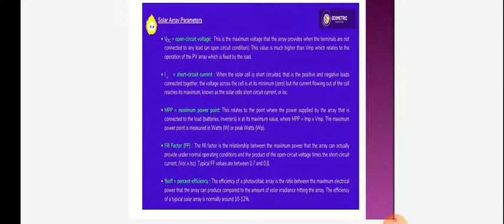The corresponding values of V maximum and IMP can be estimated from the open circuit voltage and the short circuit current. VMP is approximately equal to 0.6 to 0.9 VOC and IMP is equal to 0.85 to 0.95 ISC. Solar array parameters: VOC is the maximum voltage that the array provides when the terminals are not connected to any load in open circuit condition. This value is much higher than V maximum power which relates to the operation of the PV array fixed by the load.